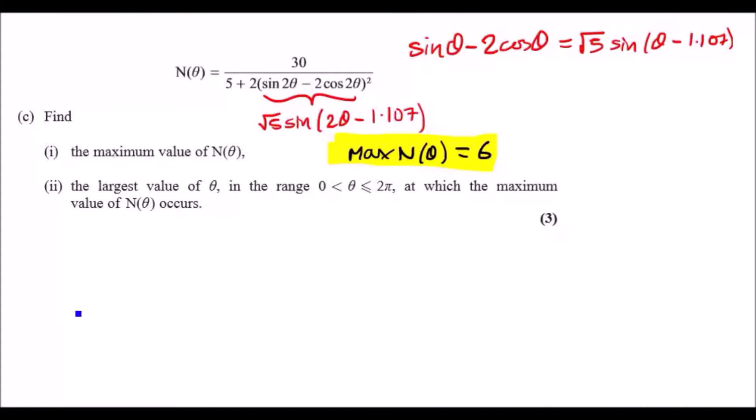And the final part of the day, so second part: find the largest value of θ in the given range in which the maximum value of N occurs. Again, using this means using the result from part I, plug in 6 there and solve for θ. Literally it. So 6 equals all of that, equals 30 over the denominator.